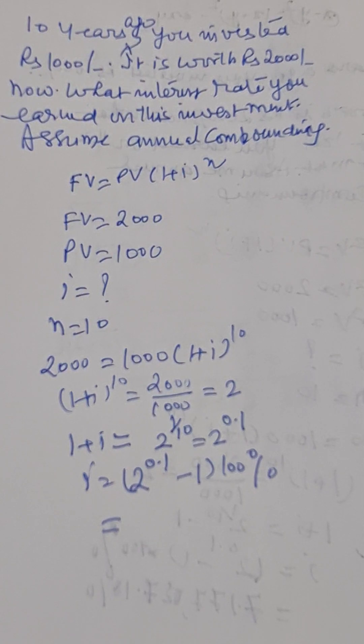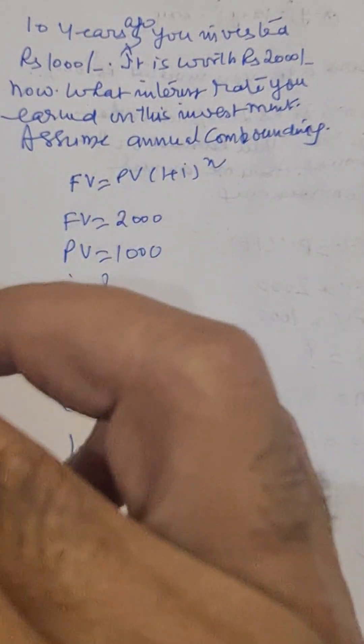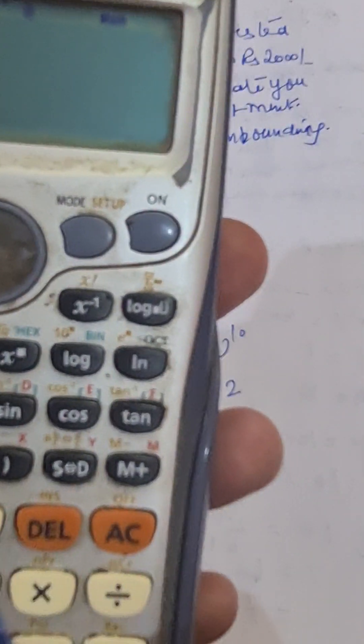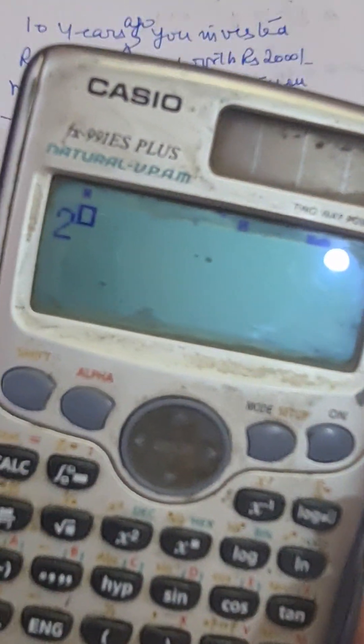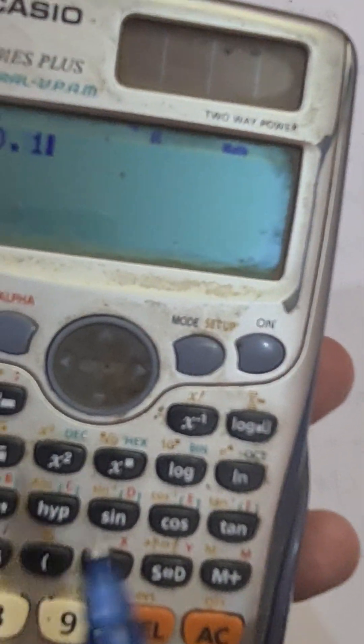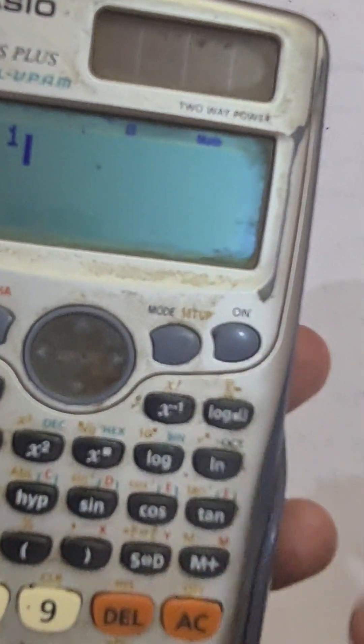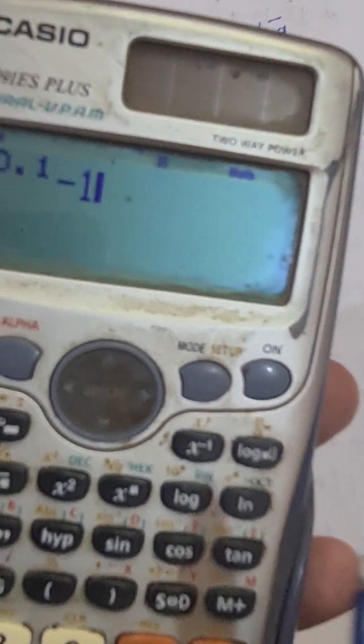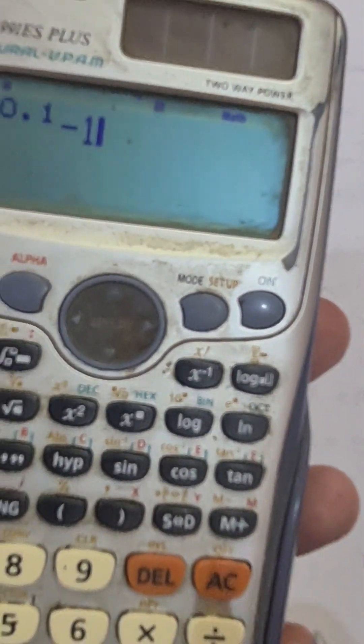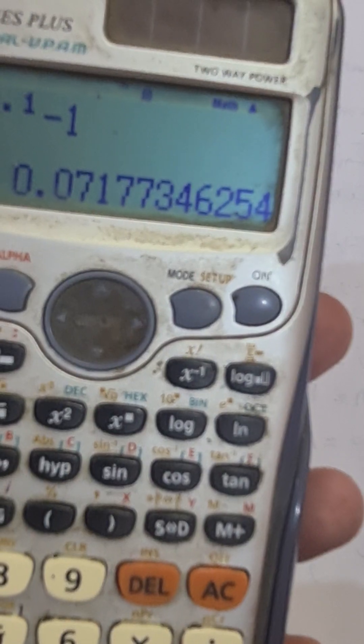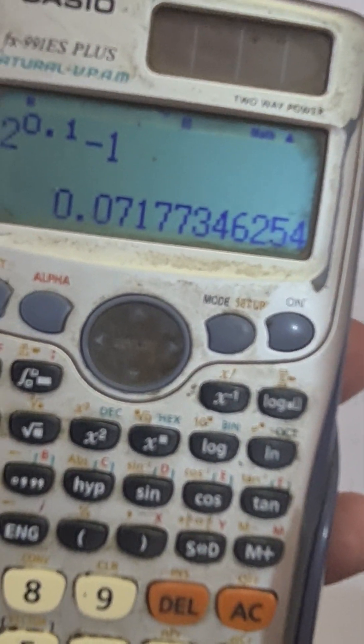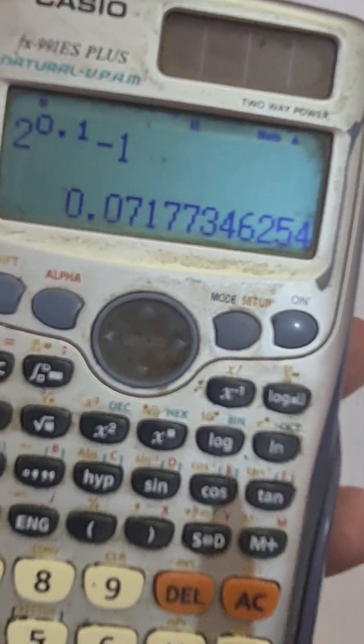So we can write it like this, two raise to the power zero point one minus one. How much it is? It is zero point seven one seven seven multiplied by hundred.